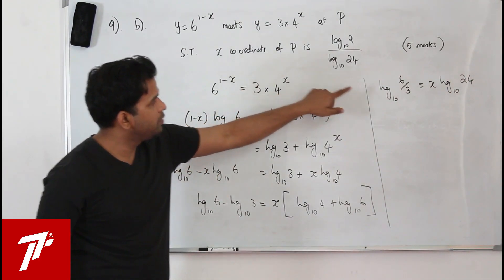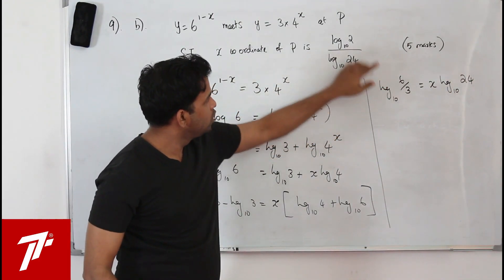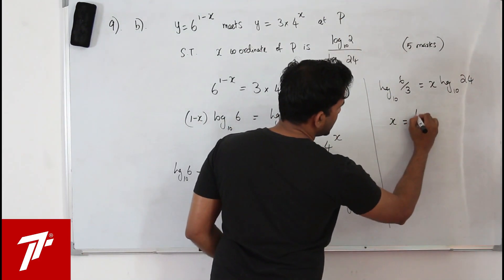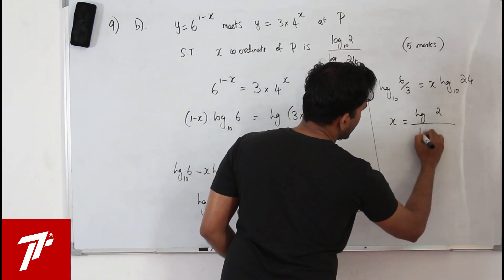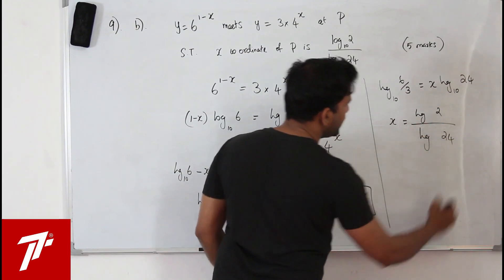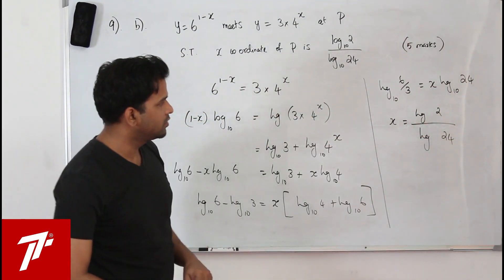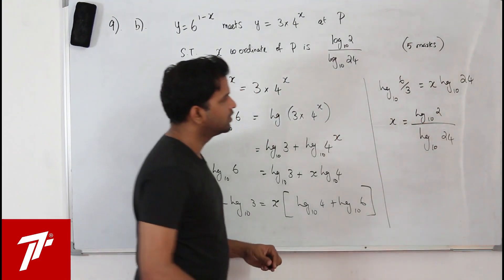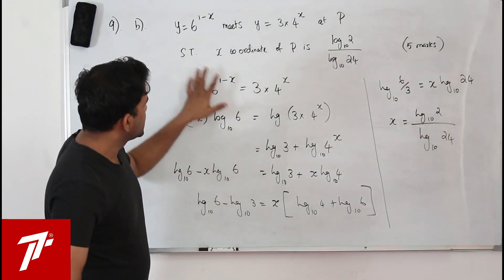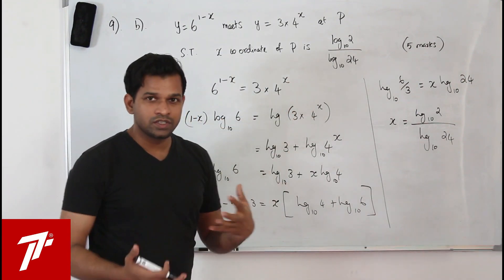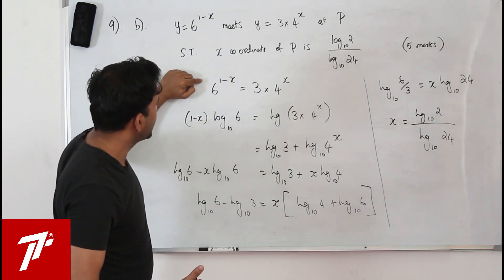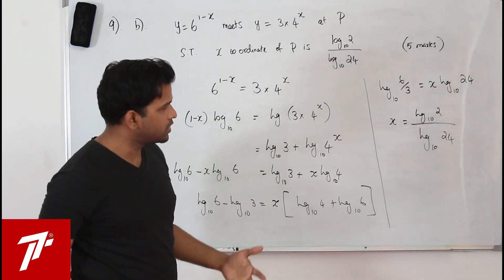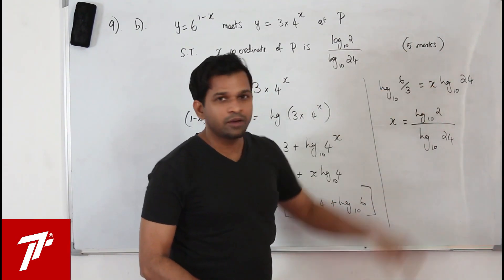You get the solution: 6 upon 3 is 2, so x equals log 2 upon log 24, to base 10. The base can be anything; here it's base 10, so just write 10. That's all — just like solving equations involving logarithms: take log on both sides, simplify, apply laws of logarithms, and you get it. These are easy 5 marks.